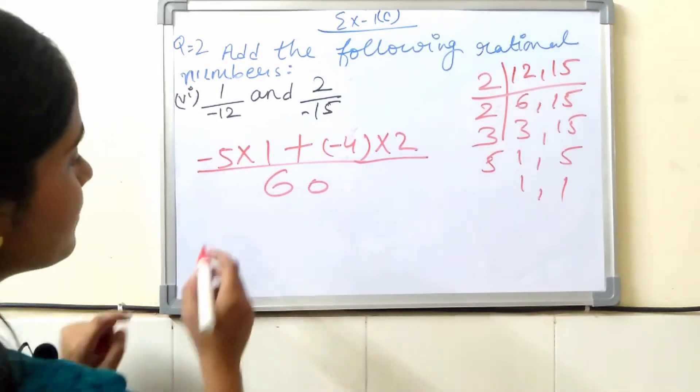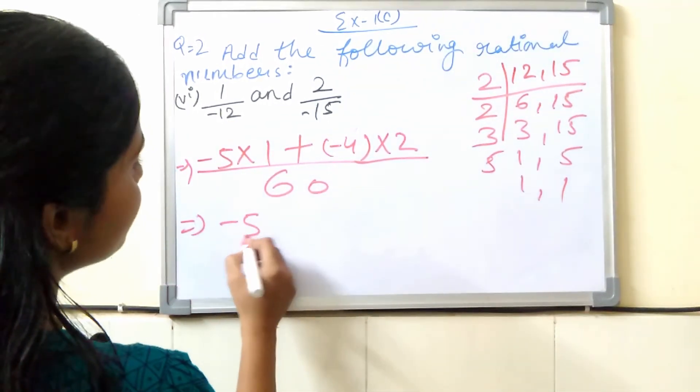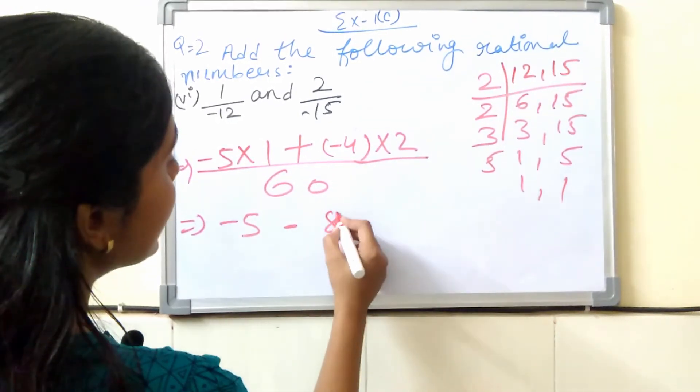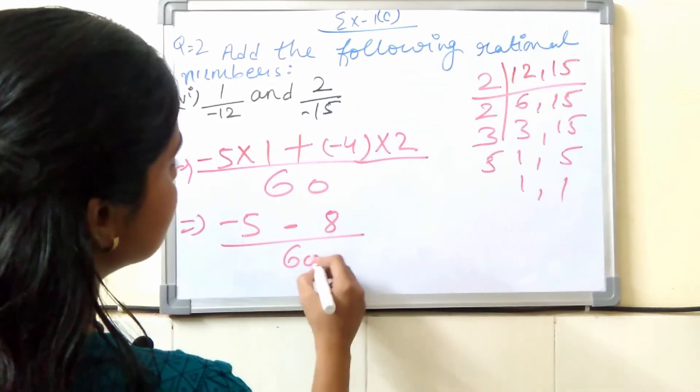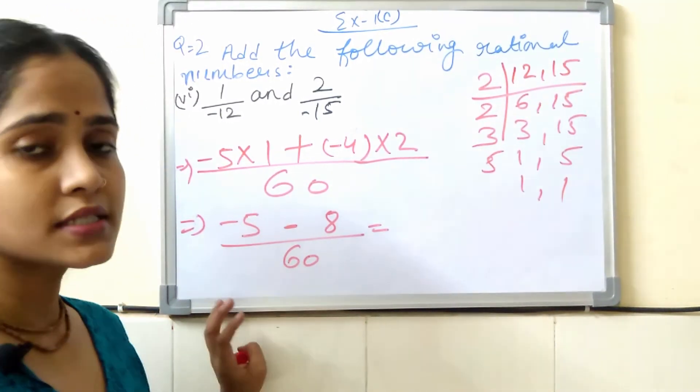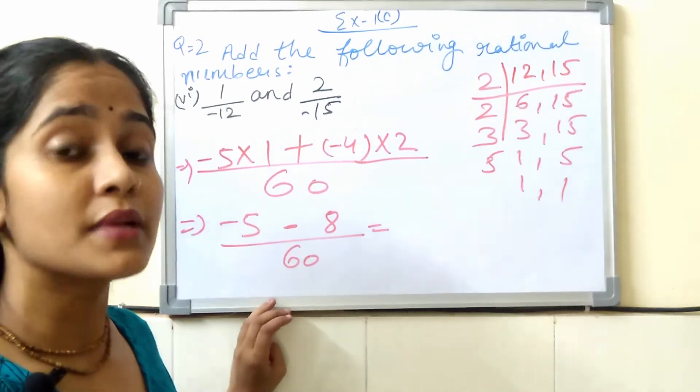Minus 5 into 1, how much will it be? Minus 5. And plus into minus. Minus 4 into 2 are 8. And upon 60. Now, see, my child. Minus 5 and minus 8. When we get 2 minus terms, we add them.